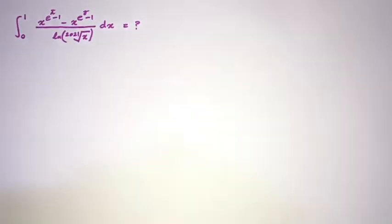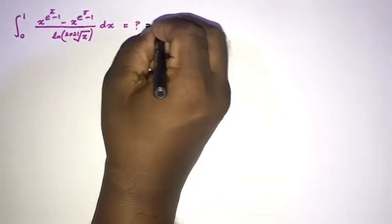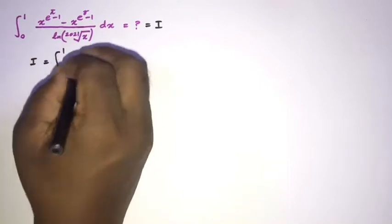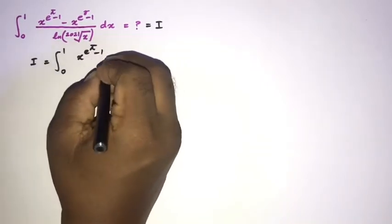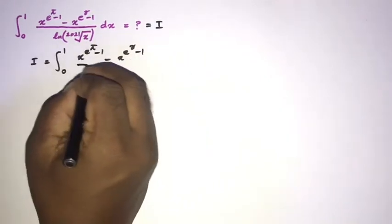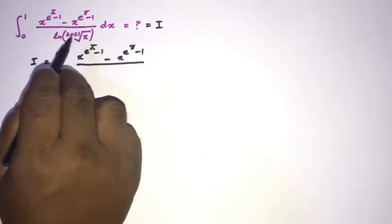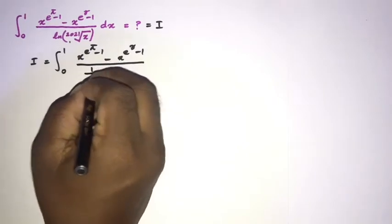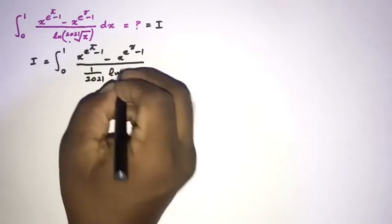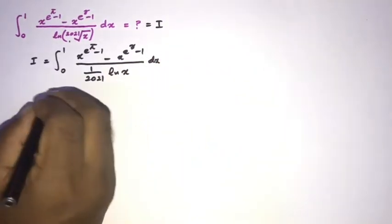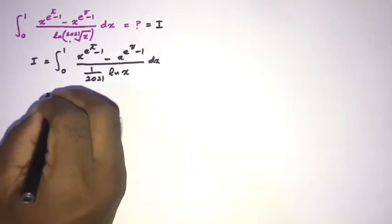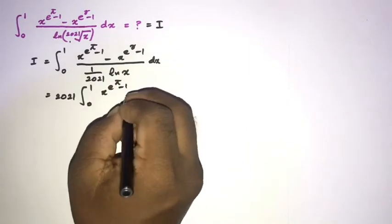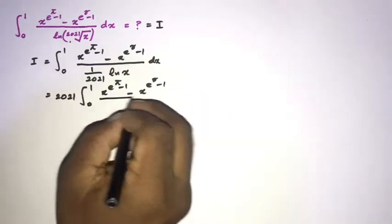Let's call our integral I. We can simplify a little bit: integral from 0 to 1 of x to the (e to the pi minus 1) minus x to the (e to the gamma minus 1), over — and using the property of natural log, we can write the 2021st root as 1 over 2021 times natural log of x. So 1 over 2021 can be taken outside the integral, giving us 2021 times the integral from 0 to 1.